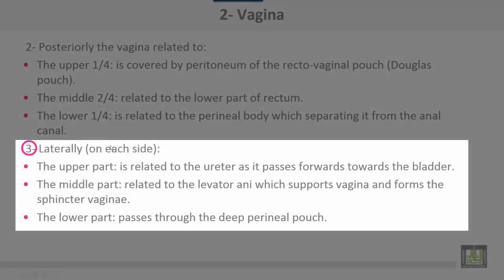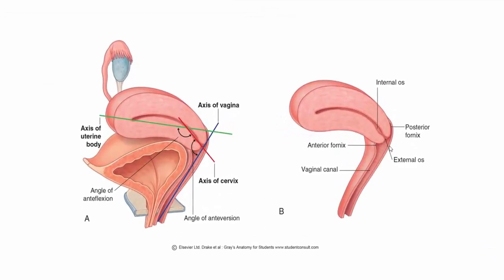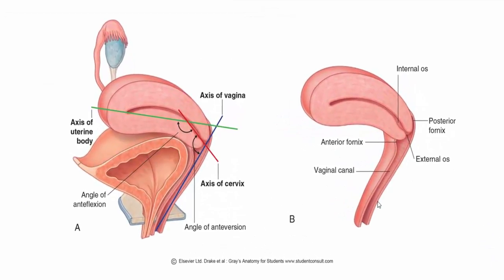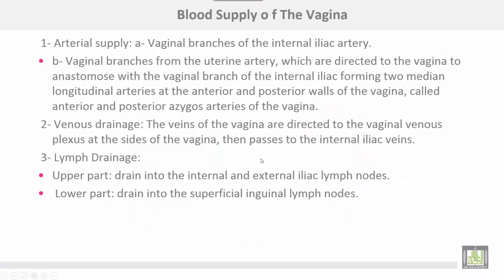Laterally, on each side, the upper part of the vagina is related to the ureter as it passes forward toward the urinary bladder. The middle part is related to the levator ani, which supports the vagina and forms the sphincter vaginae. The lower part passes through the deep perineal pouch. The anterior wall is shorter than the posterior wall because the cervix of the uterus is implanted in the anterior wall of the vagina.